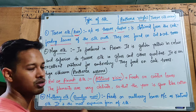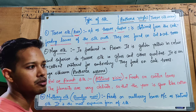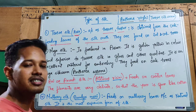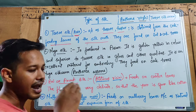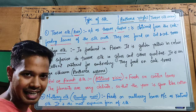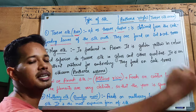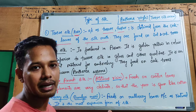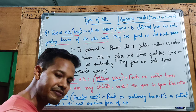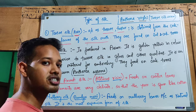This insect exhibits metamorphosis — it has different stages in its life history. From the egg it becomes a larva, which is called a caterpillar. Then there is an intermediate pupa stage, and finally it becomes an adult hairy butterfly. Silk production occurs at the larval stage.